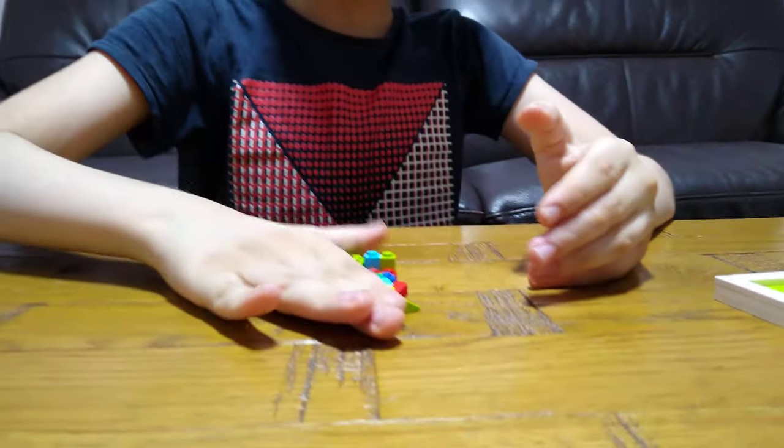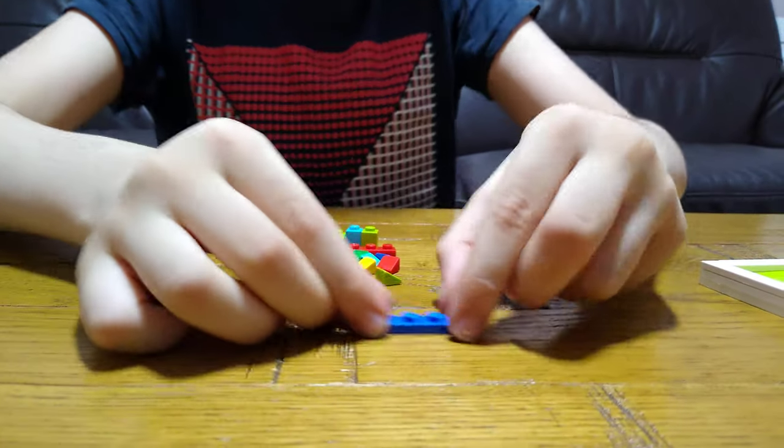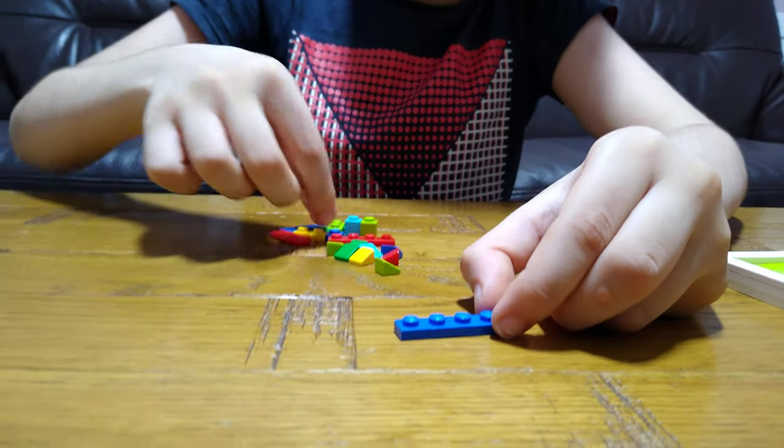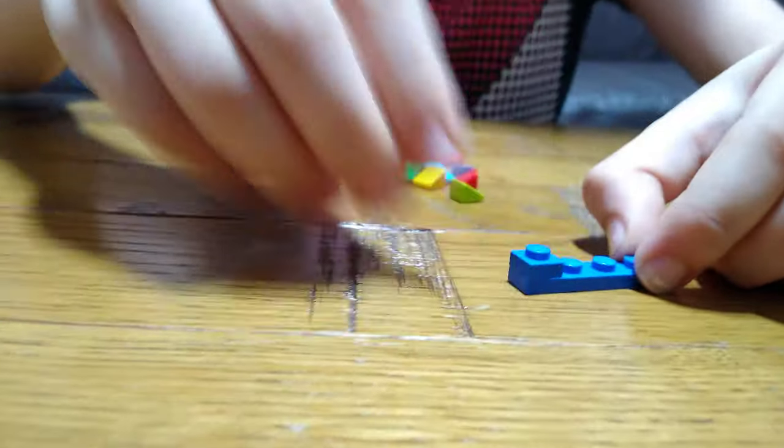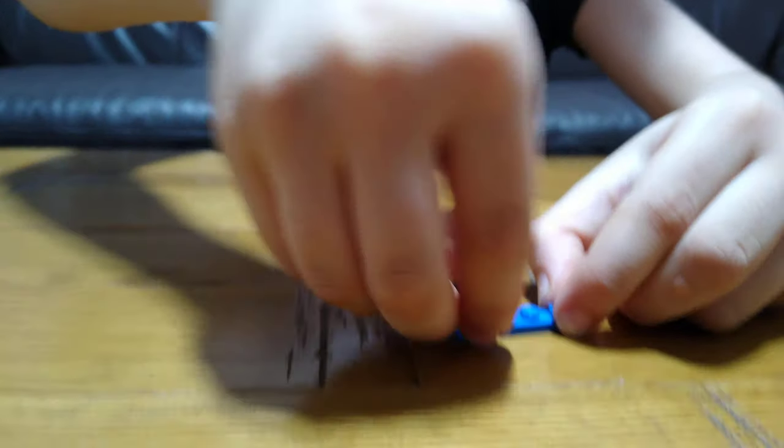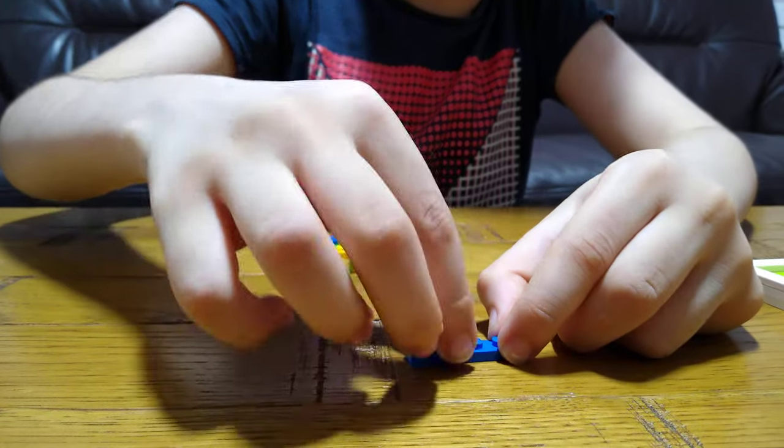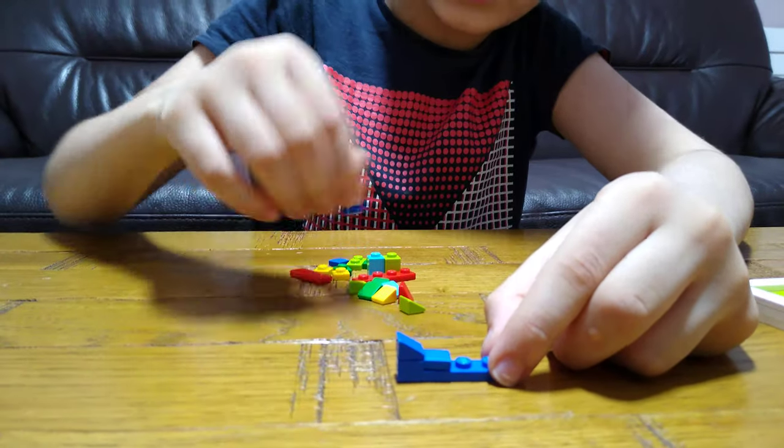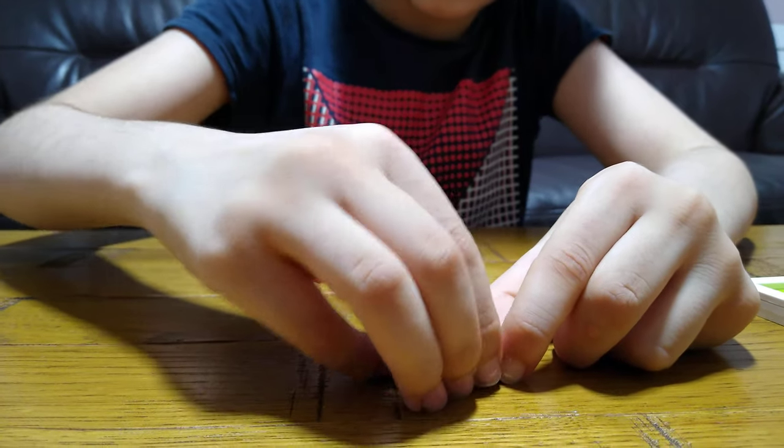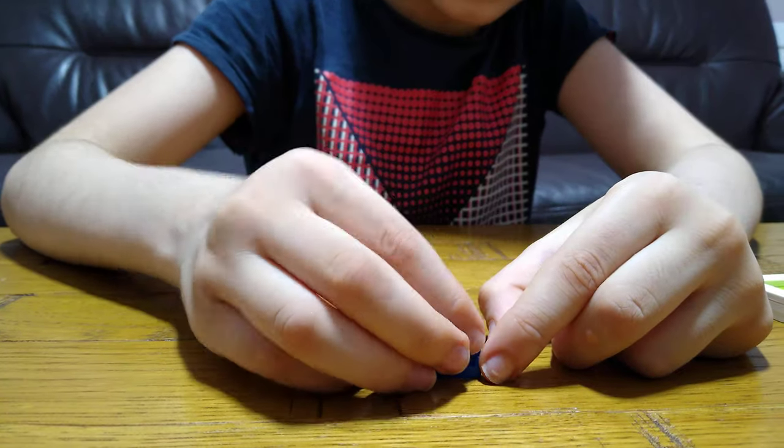So let's start. First you're going to need one of these and get one of these one by one tiles. Put one of these slopes on and get three of these one by one squares like that.